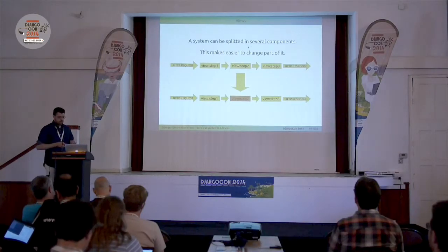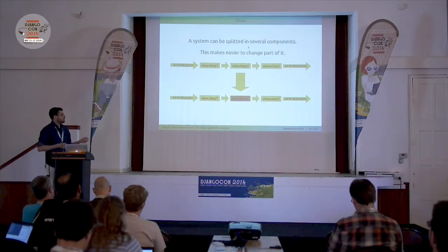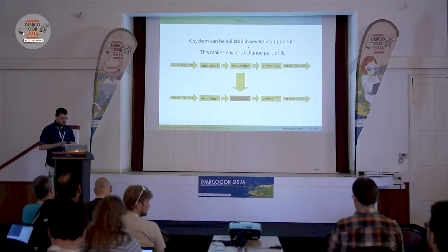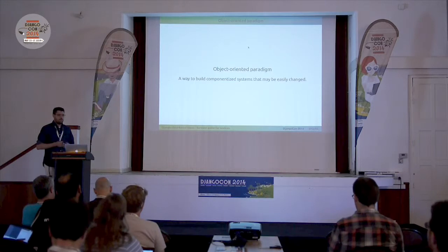What you can do with a monolithic system is to split it into several components, several steps — to allow you, or your colleagues using your code, to replace just the step or component they want to enhance. Object-oriented programming began some years ago as a way to build componentized systems, to build systems that are easy to change. Just a disclaimer: I'm not here to say that you cannot do this with functional languages. Functional languages have improved, and you can build componentized systems both ways. But object-oriented is a good way to build them.